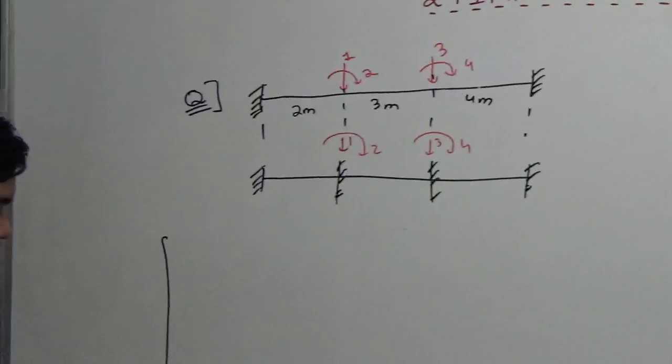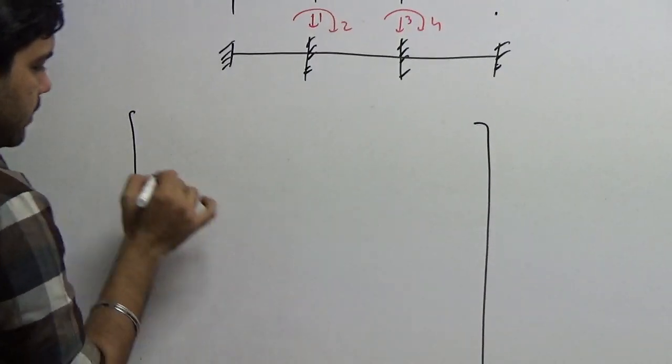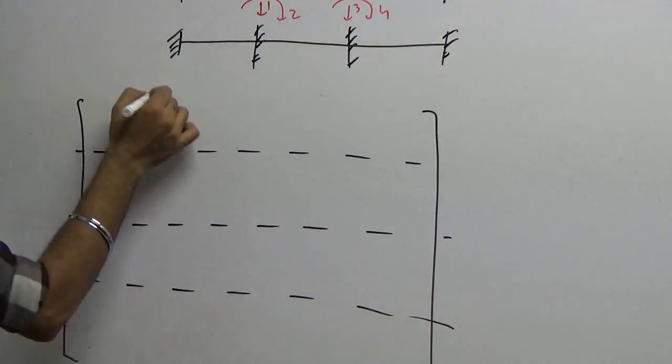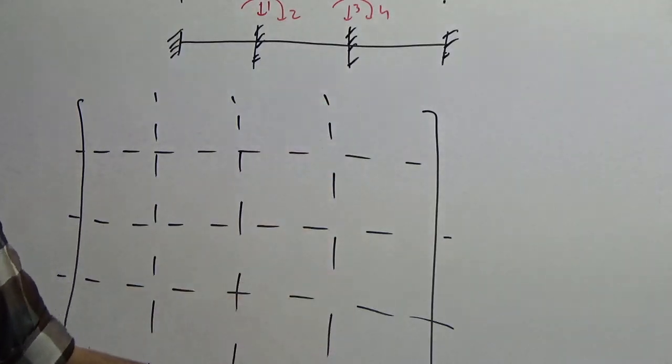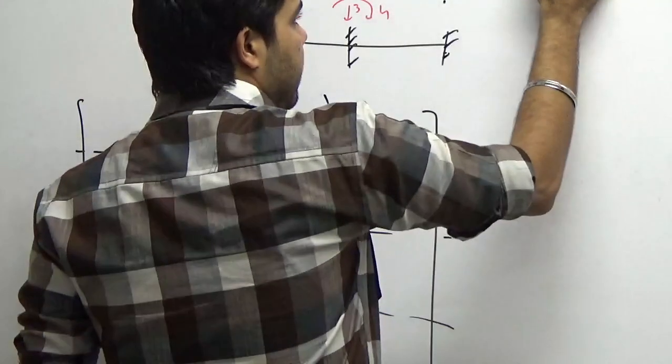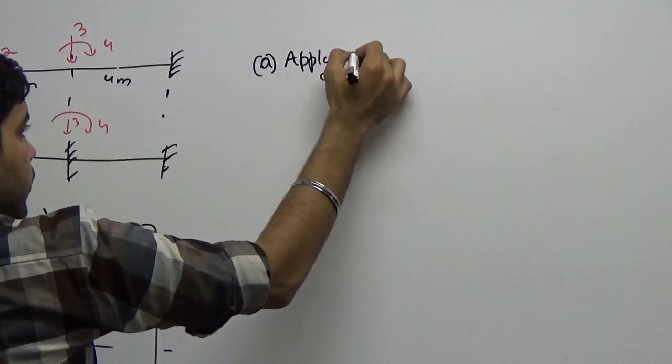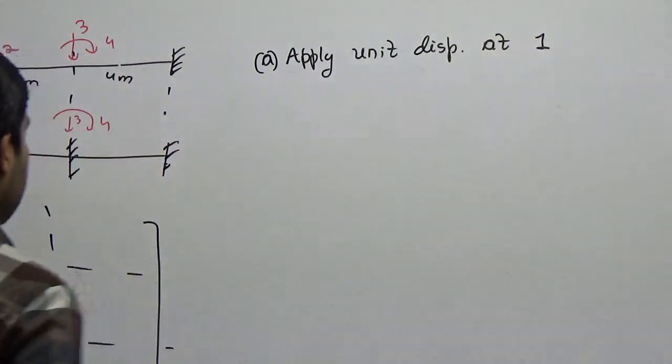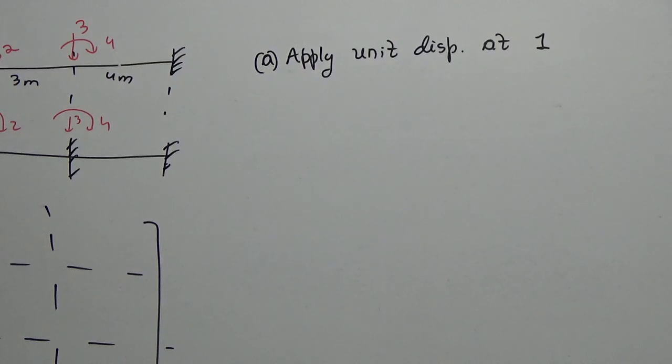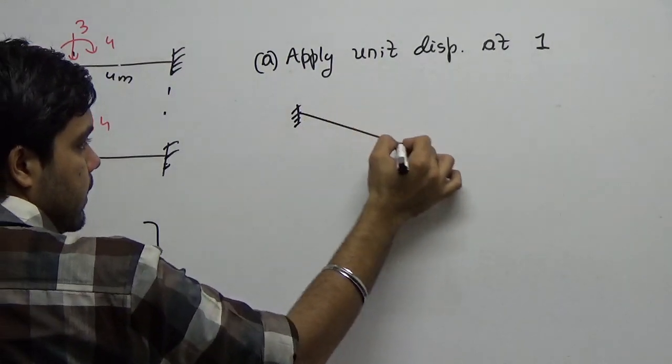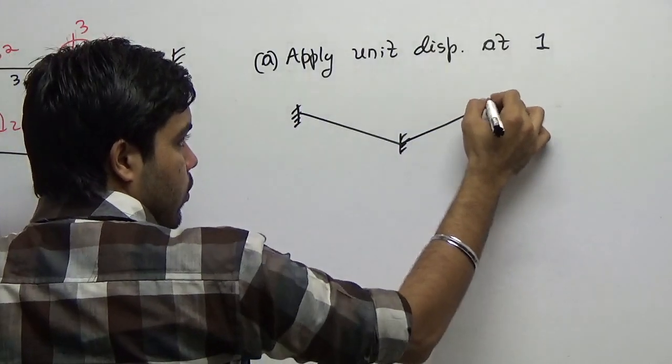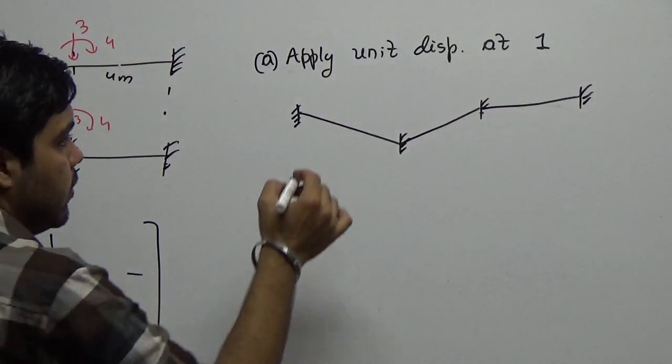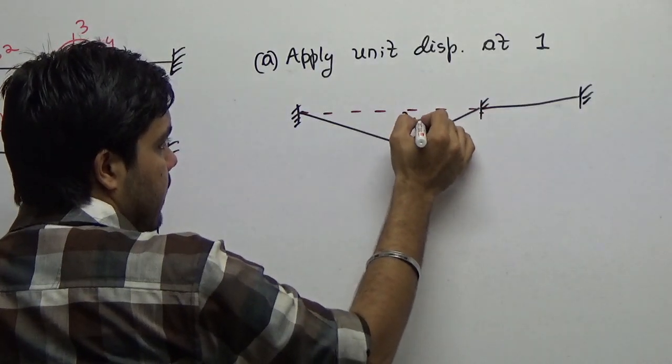For that, I will just make a matrix here. Like in flexibility, we had a 4 by 4 matrix. Here also we have a 4 by 4 matrix. Now let's try to calculate each term in the matrix. First I apply unit displacement at one. Your one is one direction, that's a translation. Your displacement diagram would be like this. I have given, see, these are like theoretical way of explaining the problem. However, this situation won't occur. But I am assuming this to be delta equal to 1.